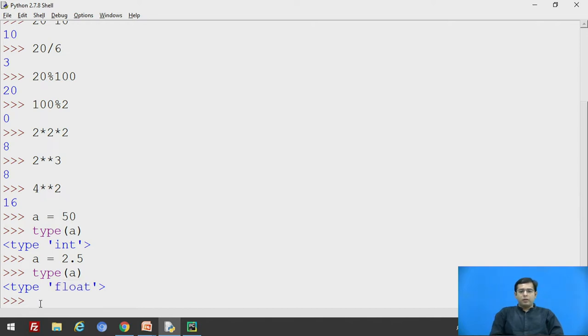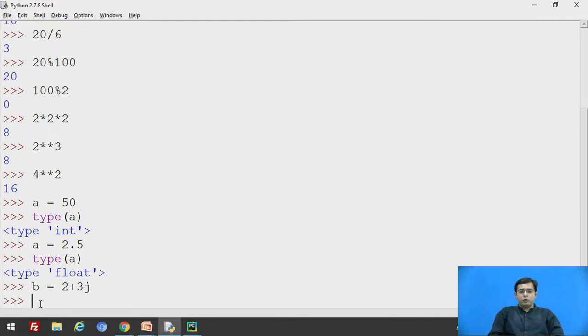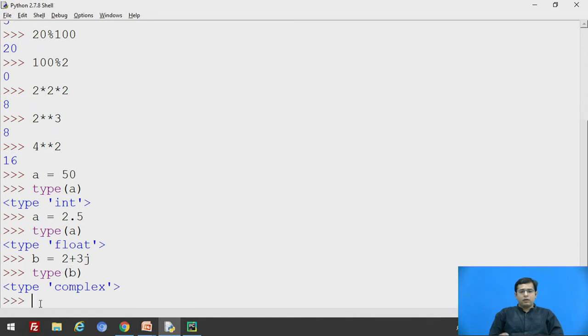Moving on to the complex numbers, if we say b is equals to 2 plus 3j, so b is assigned with 2 plus 3j which is a complex number. Now if we check the type of b, b is a complex number.